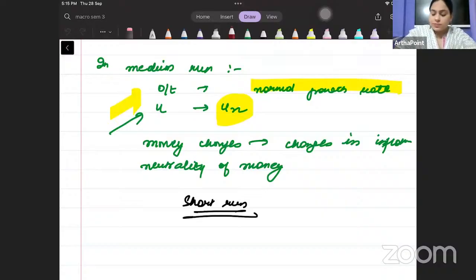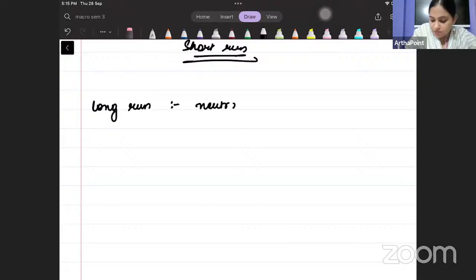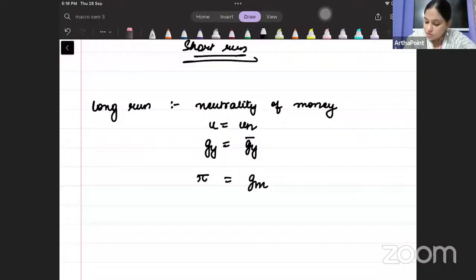You have to listen to me very carefully. So what we proved is that in the long run, we have neutrality of money. When I say that in the long run we have neutrality of money, it means that U is equal to UN, GY is equal to GY bar, and Pi, the inflation, is adjusted inflation. So when we talk about the long run, we have proved that actually we are always towards the equilibrium.